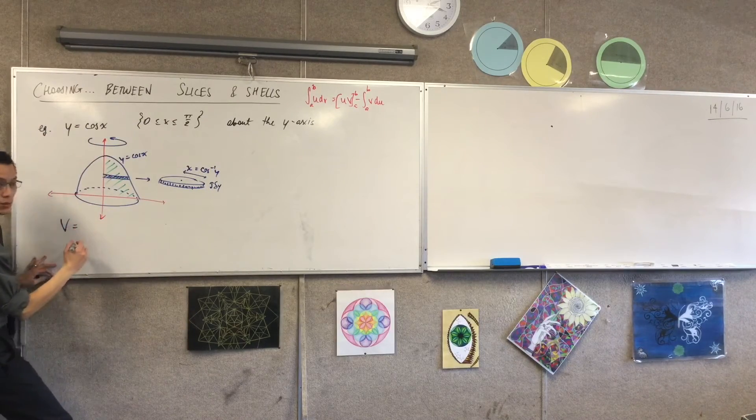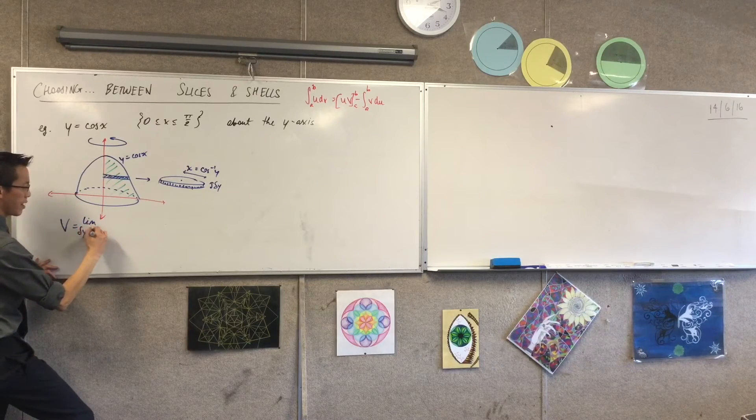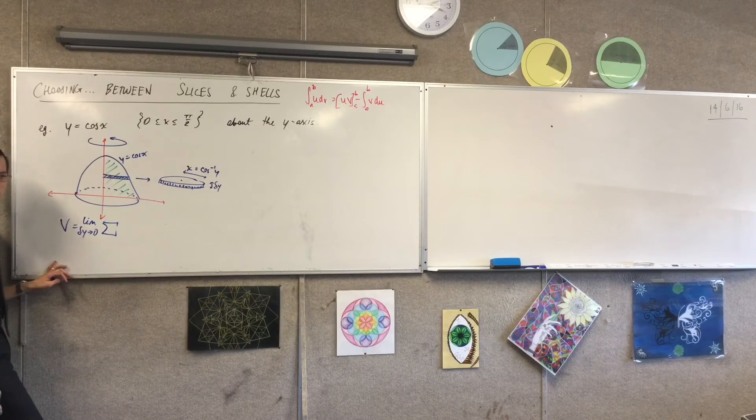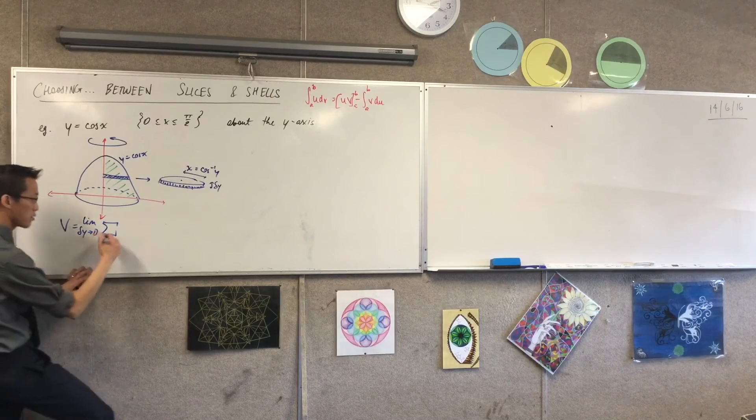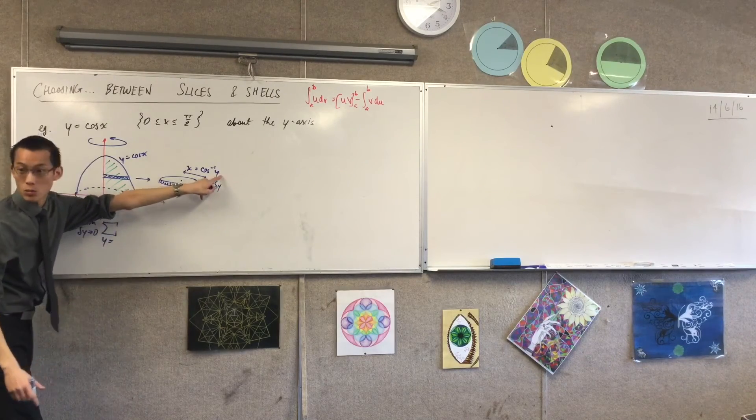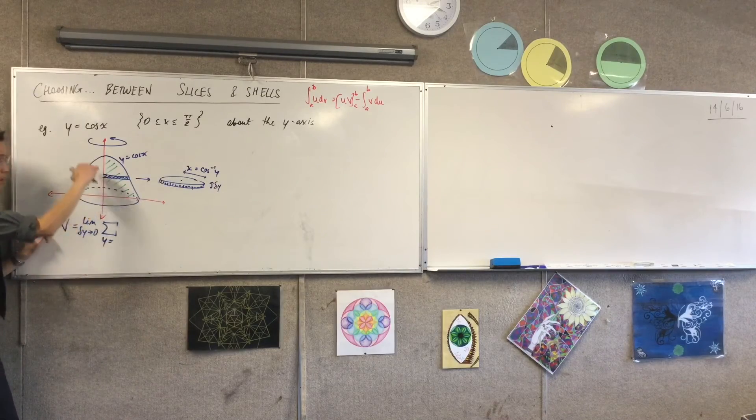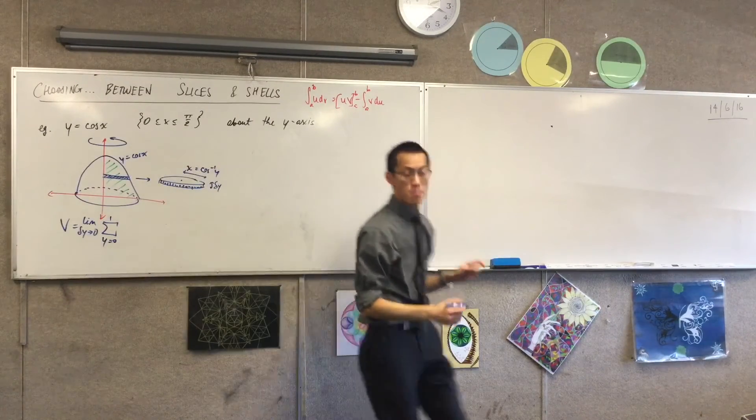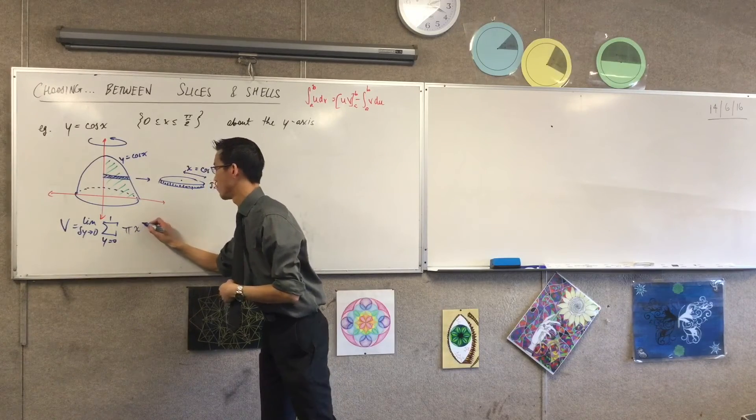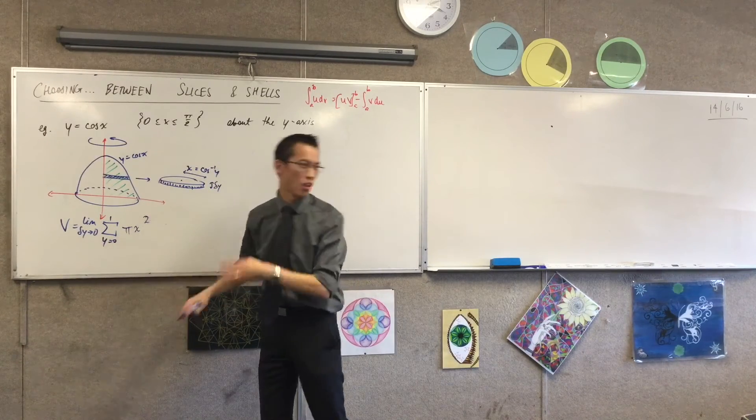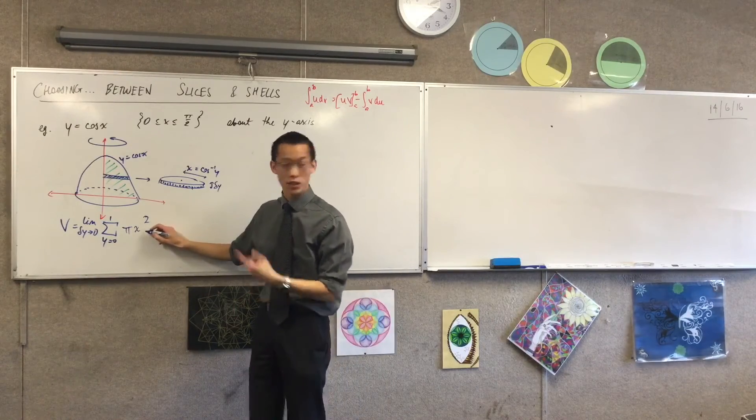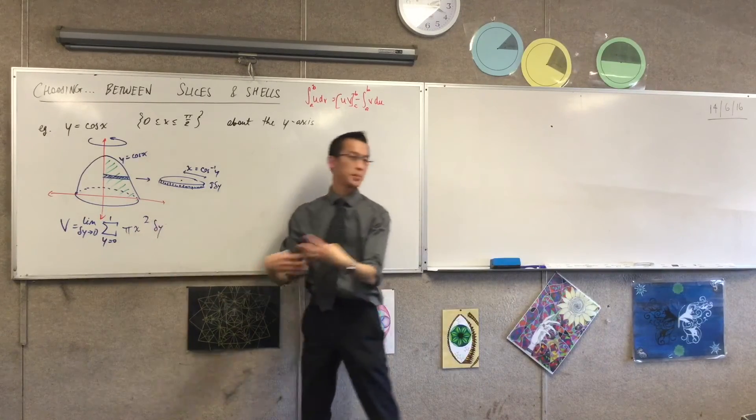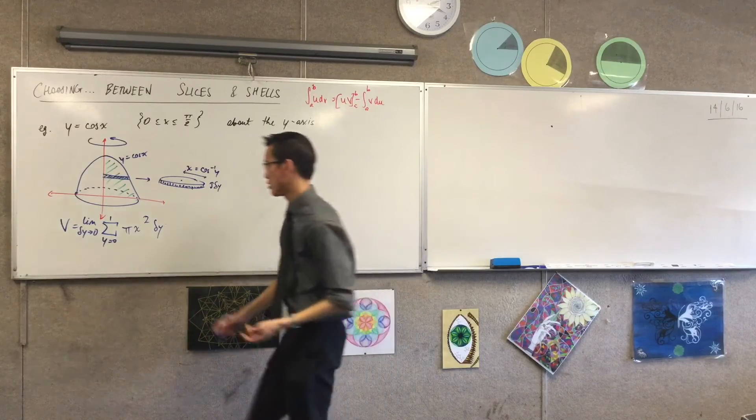So therefore, I should be able to say the volume is equal to the limit as delta y approaches 0. Where am I summing from? And what am I summing? Which values? What kinds of variable am I interested in? They're y values, right? And the way you can notice, because this is in y's, this is in y's. So I'm going from 0 up to 1. And what's in here? What am I adding together? I'll write x squared and I'll substitute it in the next line. And then I've got delta y here. Do you agree with that? So that thing there is my pi r squared h, there's my cylinder.